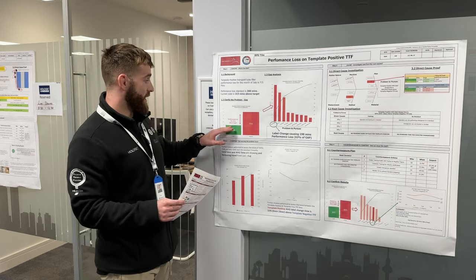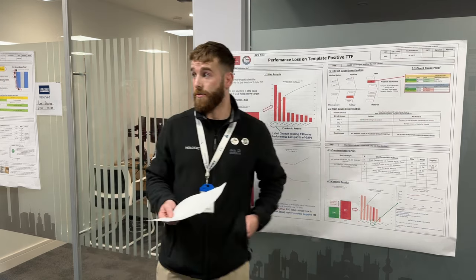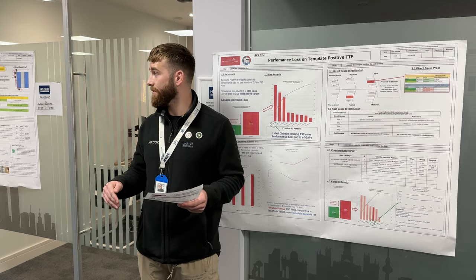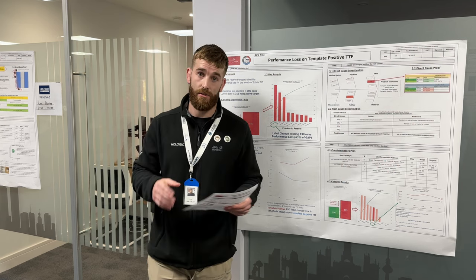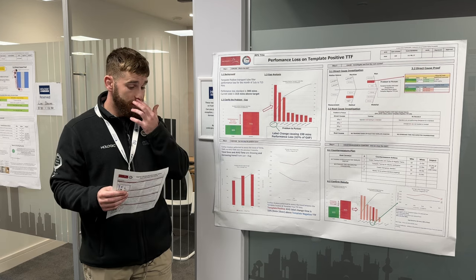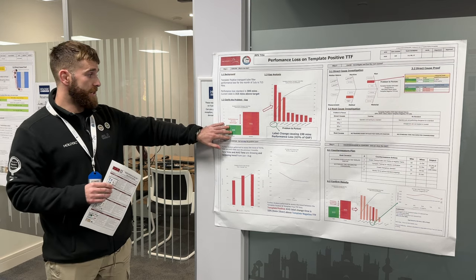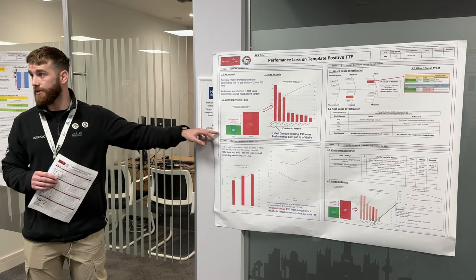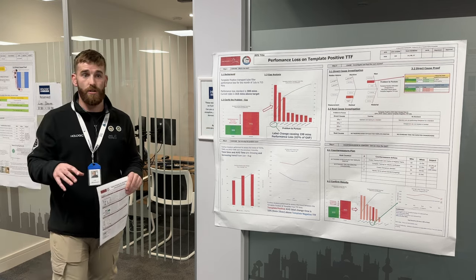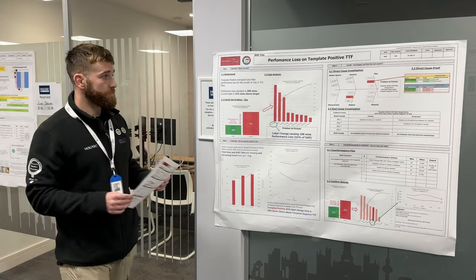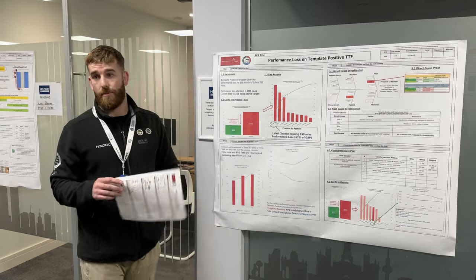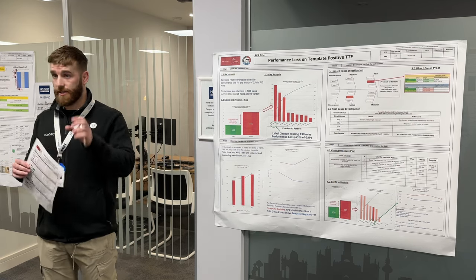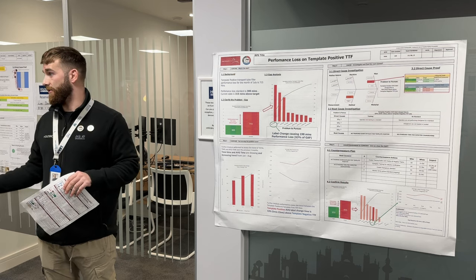Personal reflections: without a standard - without defining what good looks like - it's impossible to know if you're winning or losing. With the positive team, when nobody was asking about label changeovers it was ticking over two minutes higher on average than the negative lab. As soon as we started talking about standards, it started to come down. What worked well: I really like the clear definition of where we need to be versus where we are, highlighting that gap. It's a universal language across the site. I also like the fishbone approach - rather than opinion-based 'I think it's this,' you're saying 'here's my evidence to back it up.' It's no longer just opinion.